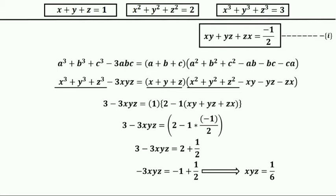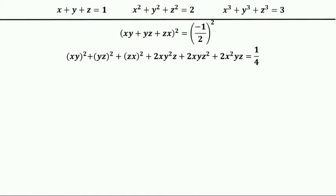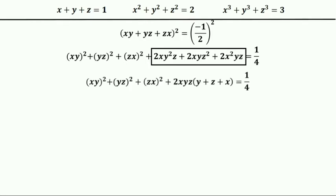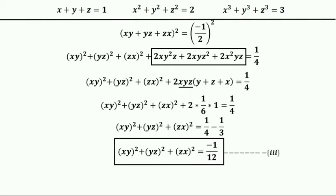Now I am going to square both sides of equation one. After using the (a+b+c)² formula and taking 2xyz as common in certain terms, and substituting xyz equals 1 by 6, we get (xy)²+(yz)²+(zx)² equals 1/4 minus 1/3. So we get negative 1 by 12. Let this be equation three.